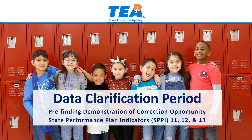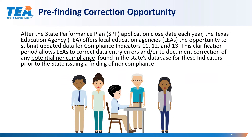This presentation provides an overview of the 2021 data clarification period for State Performance Plan Compliance Indicators 11, 12, and 13. After the State Performance Plan application close date each year, the Texas Education Agency offers local education agencies the opportunity to submit updated data for compliance indicators 11, 12, and 13. This clarification period allows LEAs to correct data entry errors and or to document correction of any potential noncompliance found in the State's database prior to the State issuing a finding of noncompliance.